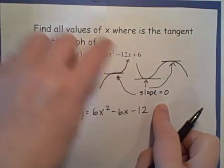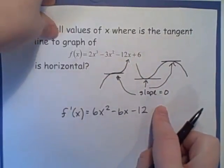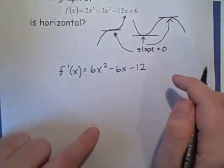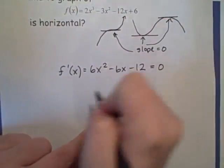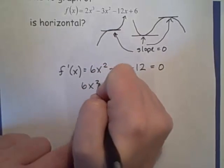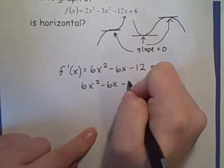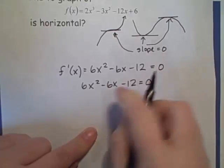So I just went term by term to find the derivative. So what I want to know is where is that equal to zero. So I have 6x squared minus 6x minus 12 equals zero.